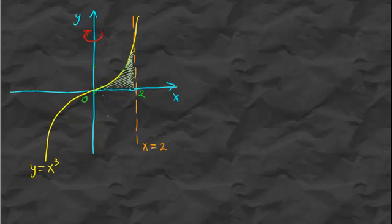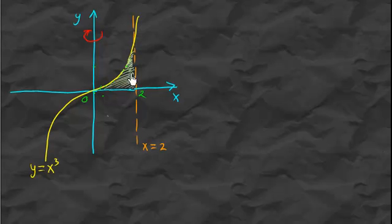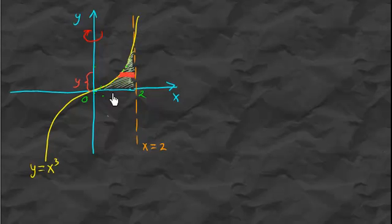We continue with the same problem but now we view it differently. Before we sliced the region vertically; now we slice horizontally. We take one horizontal slice at distance y from the x-axis, and imagine rotating that rectangle about the y-axis.